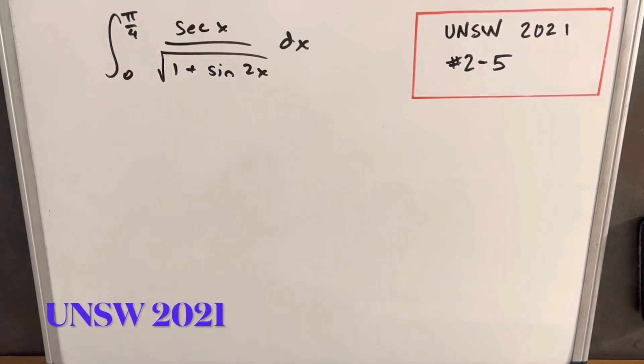Hey, we have here today another interesting integral from the UNSW Integration B 2021, problem number five from round two. This is actually the last problem from round two. The integral from zero to pi over four, secant x over the square root of one plus sine two x dx.